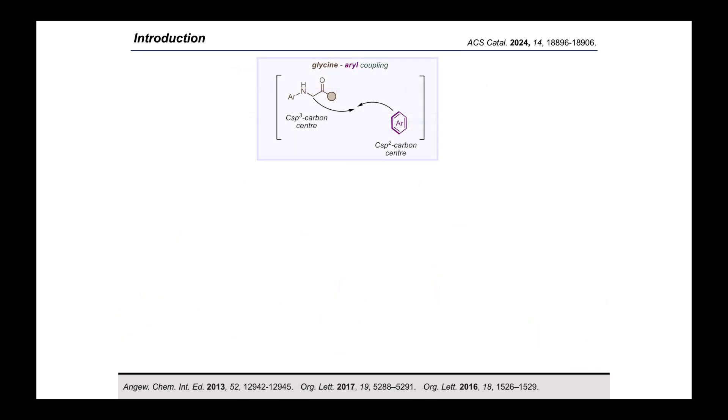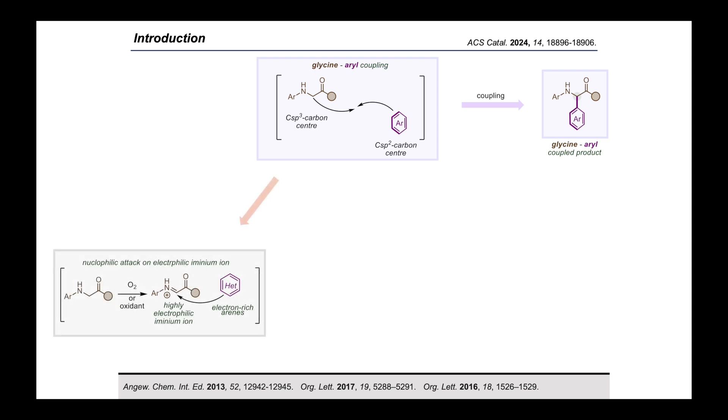Moving forward, there are some traditional reports on the coupling of glycine derivative and aryl ring, where basically the reactions were going in the presence of oxidant or in aerobic conditions. There is the formation of highly electrophilic iminium ion as an intermediate which is attacked by electron rich aryls. This limits the structural diversity, limited to only electron rich aryls, need of stoichiometric oxidants and not amenable to peptide modification.